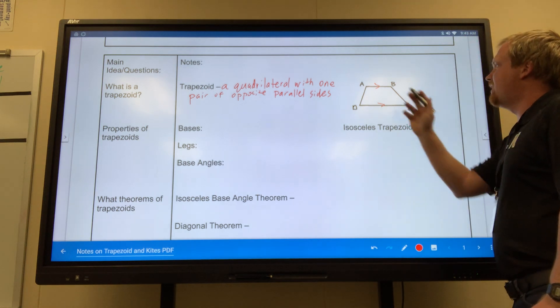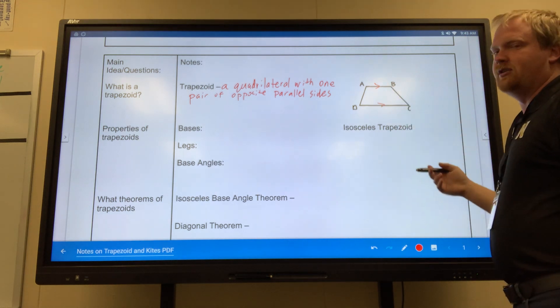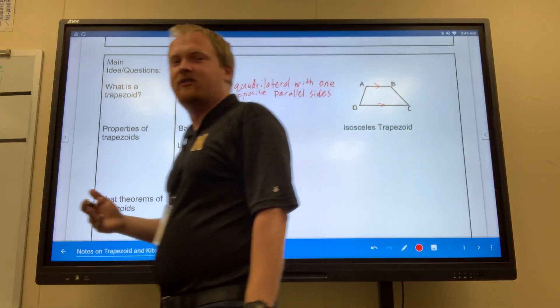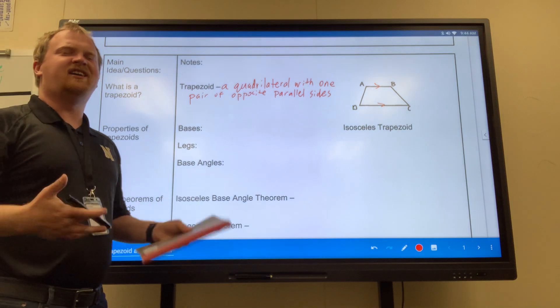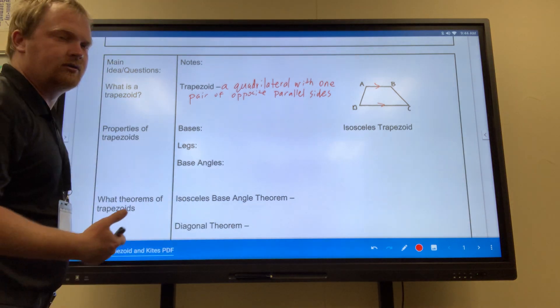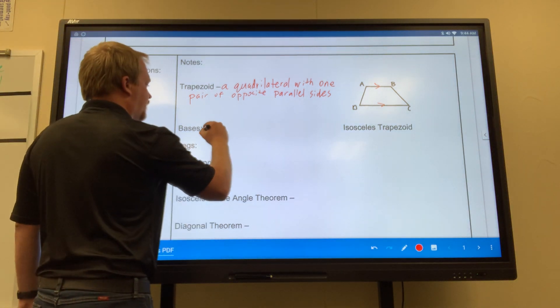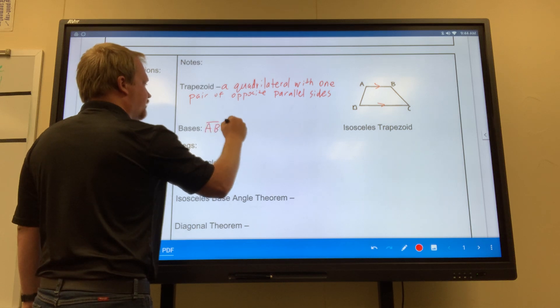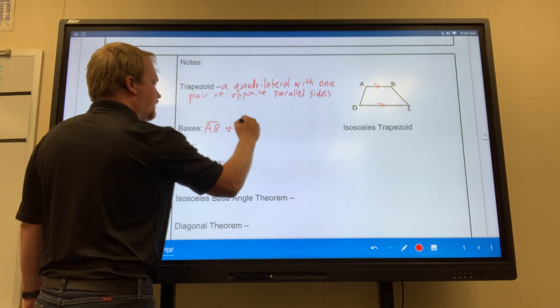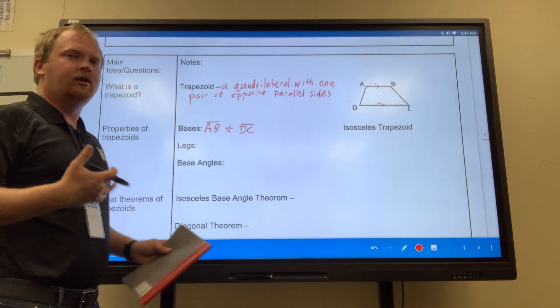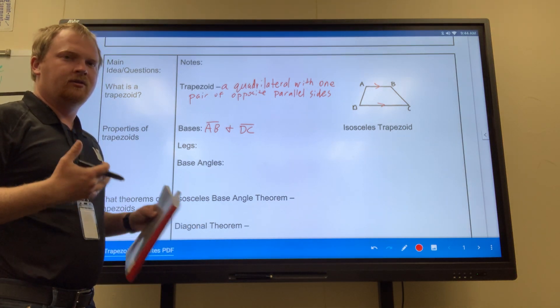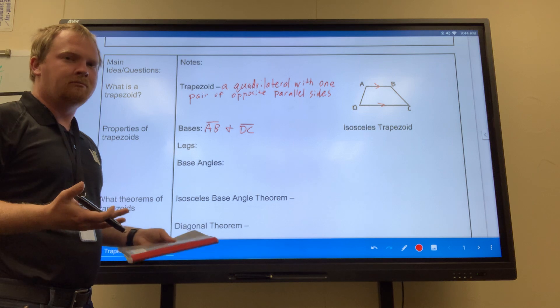In this case, AB is parallel to DC. Now, what are the bases exactly? What's the base of a trapezoid? Well, it's going to be the side that is parallel. So AB is one base, as well as DC being the second base. So I know those two bases are parallel. Those are going to be my bases.